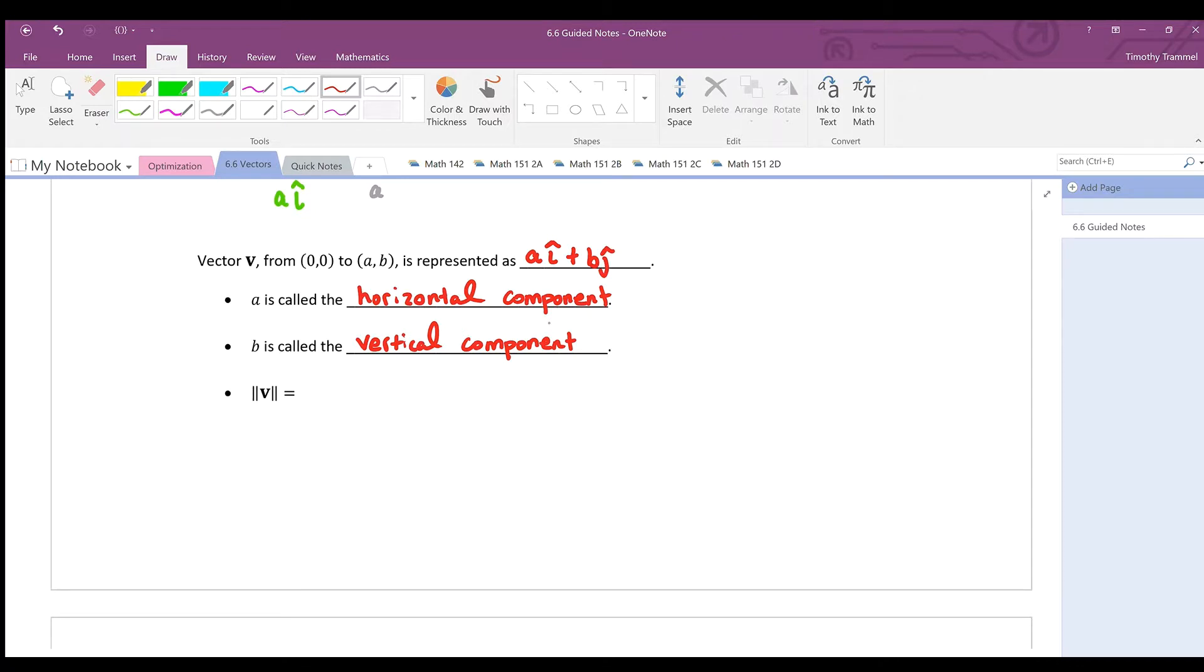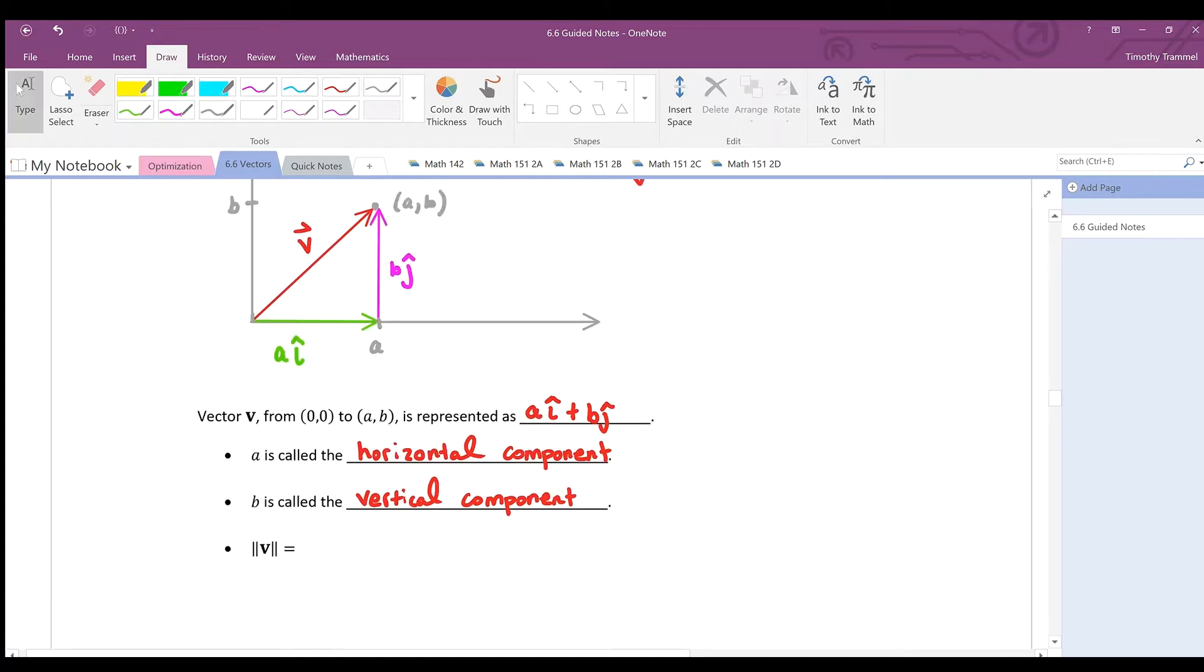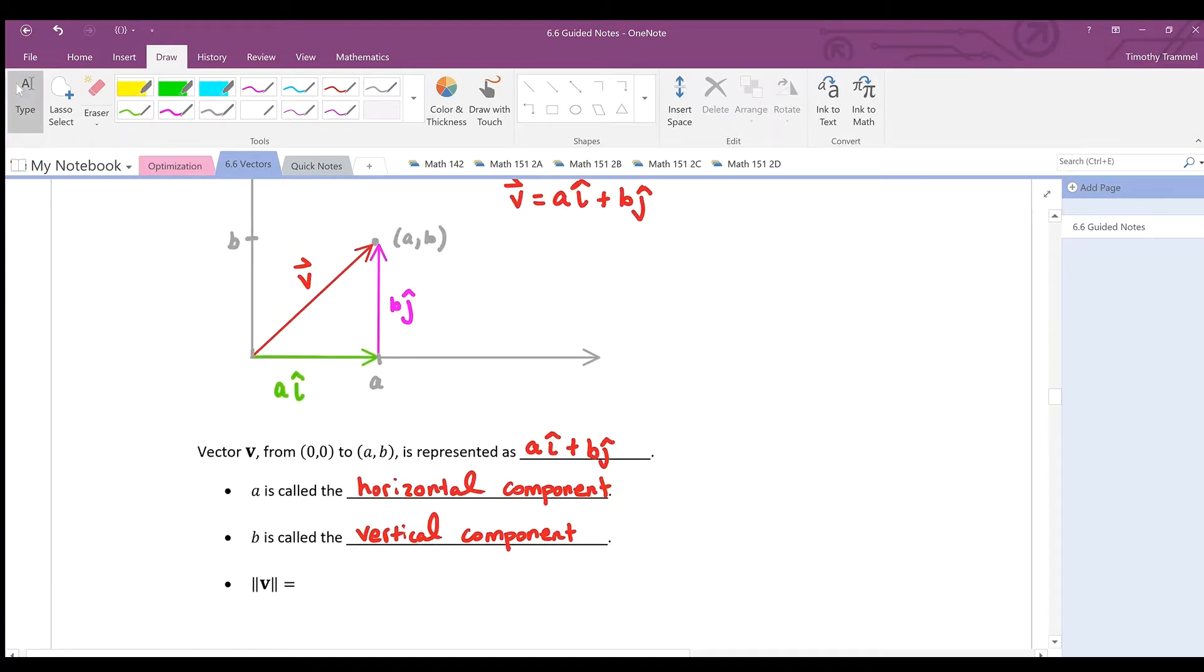Next here we have the magnitude of v. Notice all we have here with v is a triangle with base a and height b, so we just use our Pythagorean theorem to get the length of the vector v. This is just the square root of a squared plus b squared. So it ends up if we write our vectors in terms of i and j, we can find their magnitude really easy, and we can also find what direction they're headed very easily if they're written in terms of i and j.